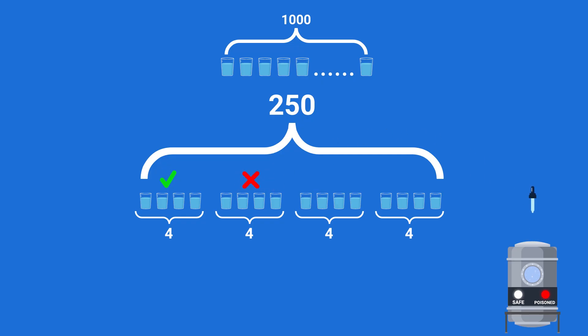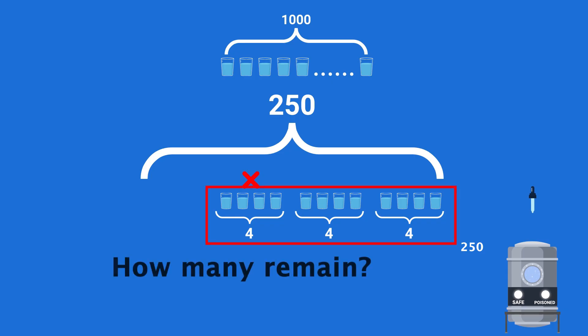So that'll come out to 250 tests so far, which I'll keep on the screen. Now some tests like that first one will come back as safe. This means we can just discard those because there's no poison in any of them. After that, the last step in this method is to test every drink that remains individually. The question is, on average, how many drinks or groups will remain after discarding the safe ones?